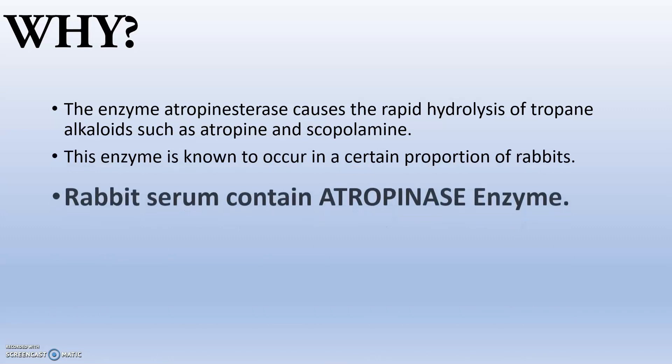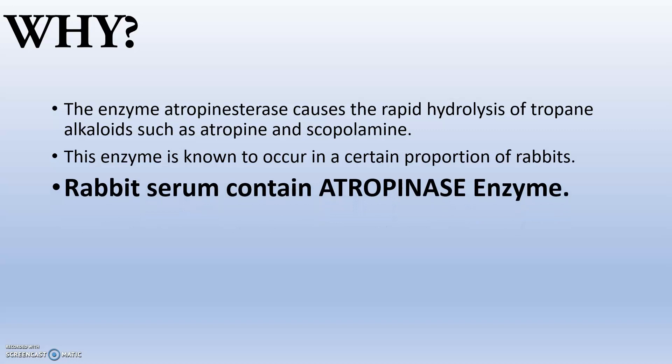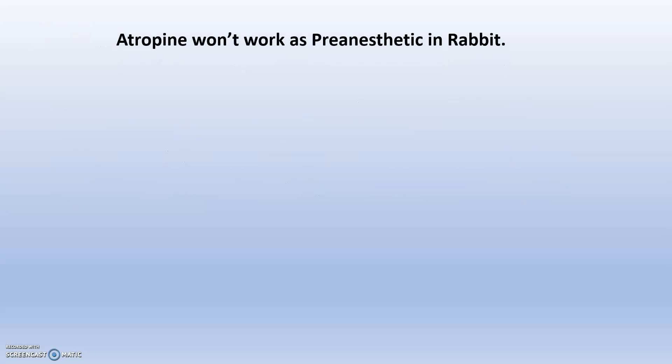This enzyme is known to occur in a certain proportion of rabbits. The rabbit serum contains atropinase enzyme — also known as atropine esterase — which breaks atropine into fragments. As a result, atropine will not bind to any receptor or produce any action, meaning atropine won't work as a pre-anesthetic in rabbits. We therefore need another anti-cholinergic pre-anesthetic drug.